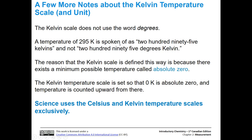An important note: the Kelvin scale does not use the word 'degrees.' We say '295 K' or '295 Kelvin,' not '295 degrees Kelvin.' This is because the Kelvin scale is defined based on absolute zero — the minimum possible temperature. Zero Kelvin is absolute zero, and temperatures are counted up from there rather than using the freezing point of water as a baseline. Science uses Celsius and Kelvin exclusively, not Fahrenheit.